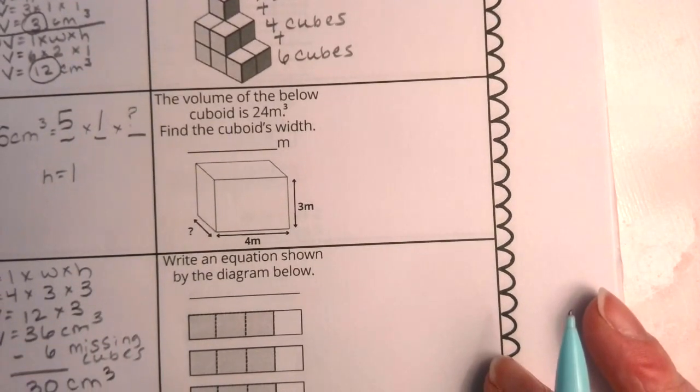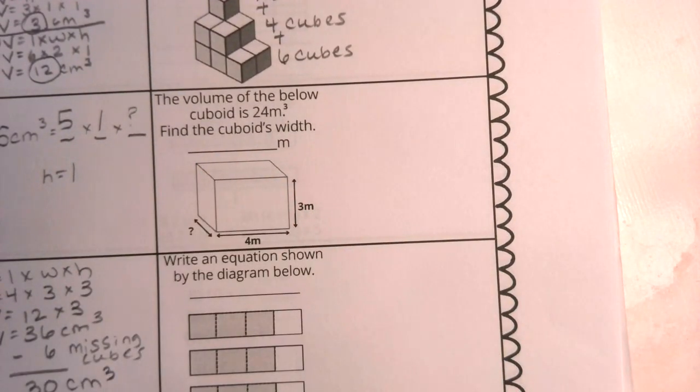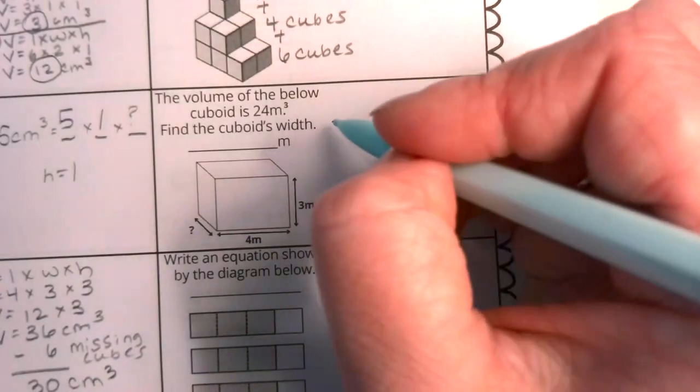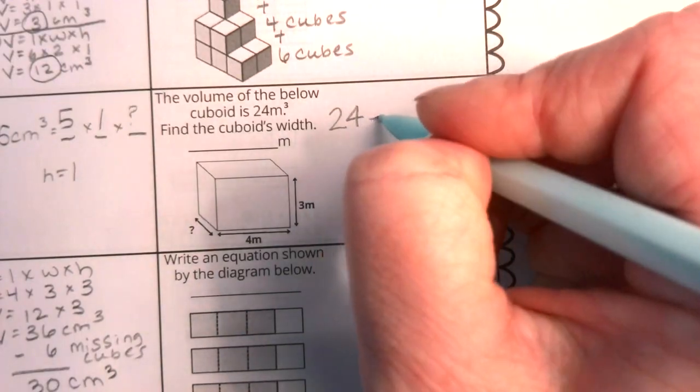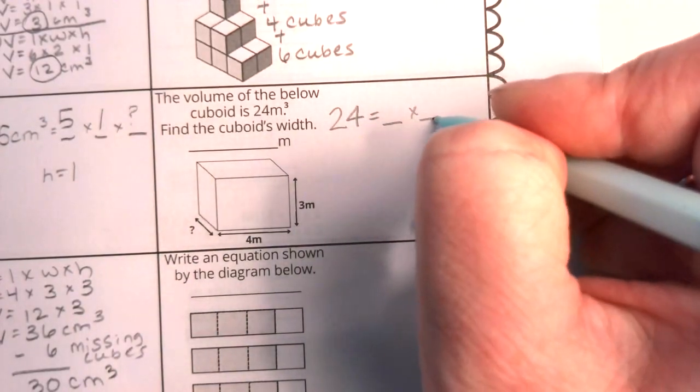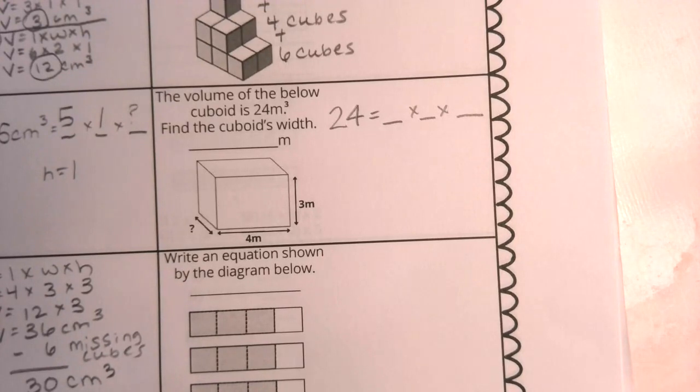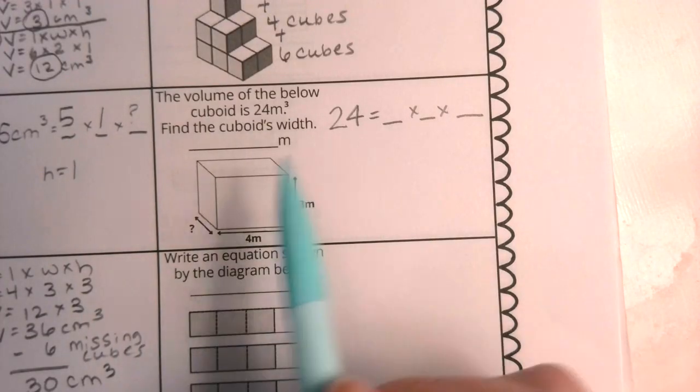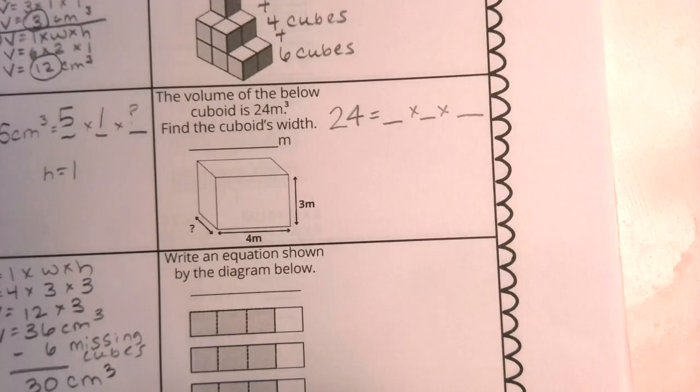Now let's go down below and let's take a look at the volume of a regular shape. The volume of the below cuboid is 24 meters cubed. Find the cuboid's width. So here, boys and girls, you've got calculating volume. We are told the volume. Instead, I am finding a missing dimension. We've seen this time and time again. We can use our multiplication facts and our good mathematical thinking to figure out what the width has to be.